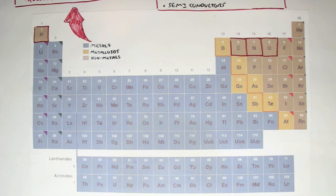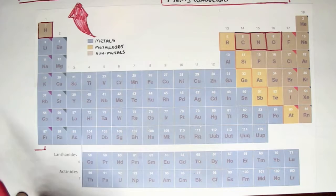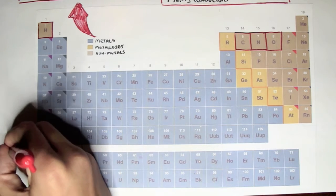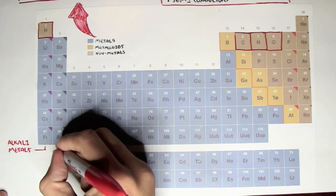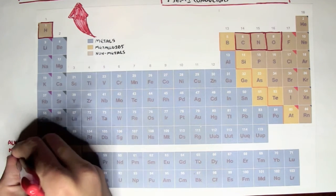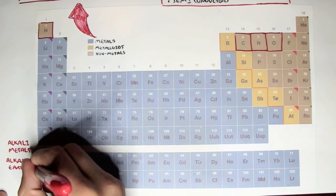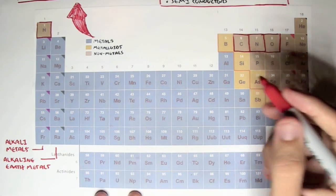We can group the elements even further according to their physical and chemical properties in each group. For example, group 1A, this first vertical row, they're known as alkaline metals. Then we have group 2A, which is known as the alkaline earth metals. Remember, all these groups, they share very similar chemical properties and behavior, particularly with electrons.